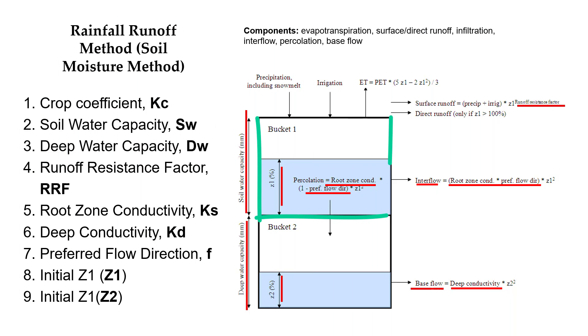The soil moisture method divides the catchment into two soil layers. The first one is called root zone and the second one is called deep zone. Different processes of the water balance occur at each layer.